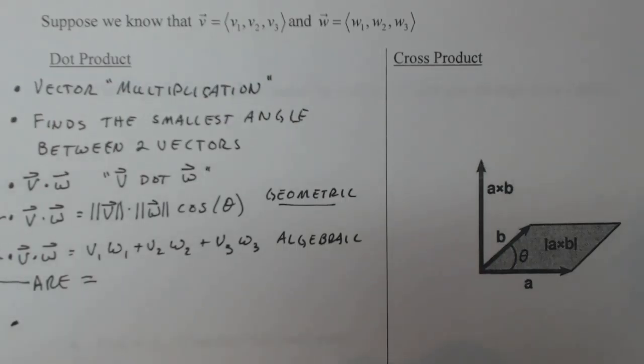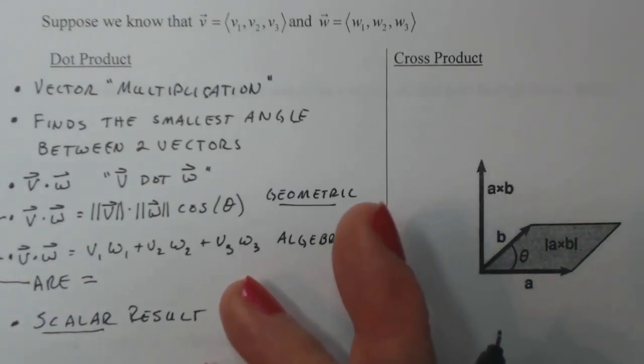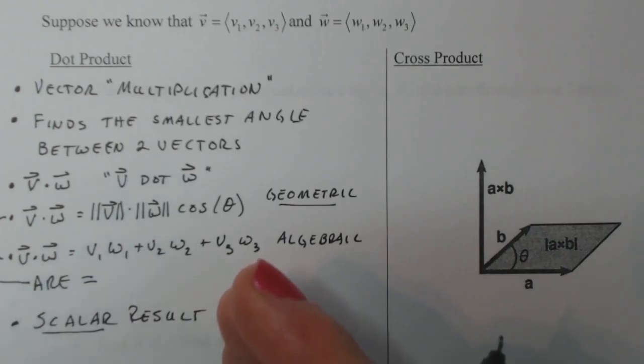When you do the dot product of two vectors, your result is not a vector, it is a scalar or constant. Scalar result. This can get confusing when you compare cross product, so cross product is always a vector result, dot product is always a scalar result. If you're getting a vector when you're doing dot product, that's a problem.